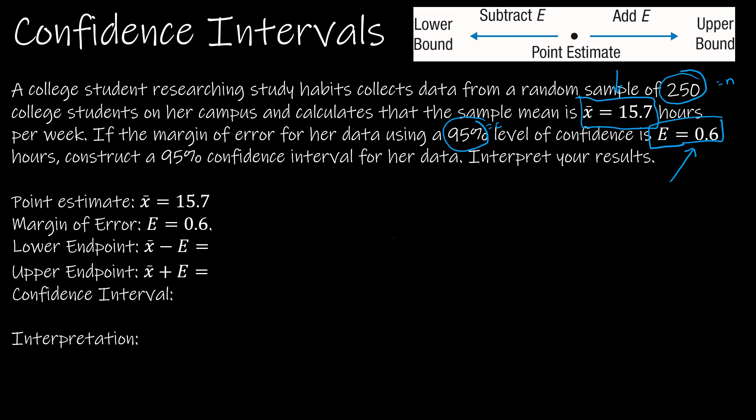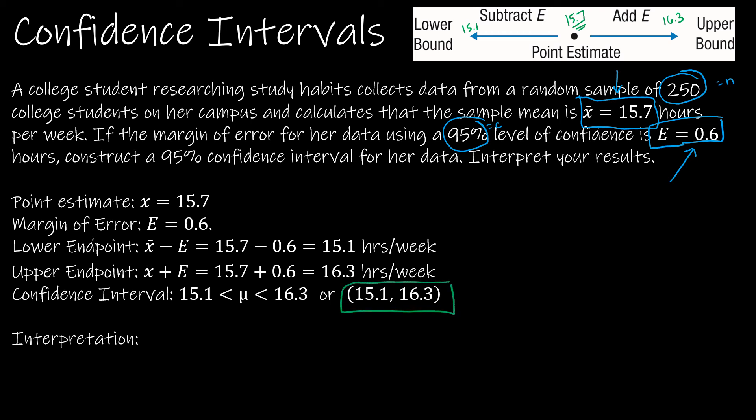So in order to find the lower endpoint and upper endpoint, essentially what it's going to look like is we're going to have 15.7 here in the middle. And then I'm going to add 0.6 to the right. So if I add 0.6 to 15.7, I get 16.3. And then I'm going to subtract 0.6 to the left. That's going to give me 15.1. And I've subtracted it from the point estimate. So if, as you can see, 15.1 hours, 16.3 hours, my confidence interval is going to look like this, 15.1 to 16.3. Notice the curved parentheses. You might also see it written like this, but typically this is the way I'm going to want to see it.